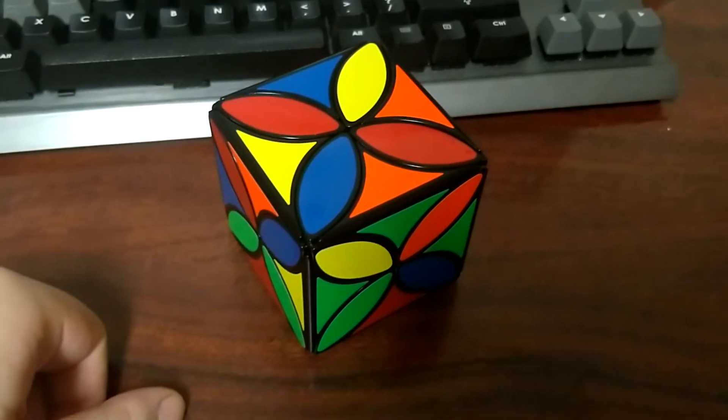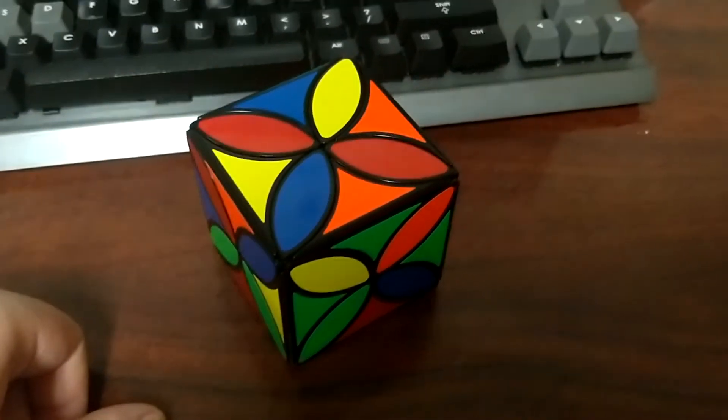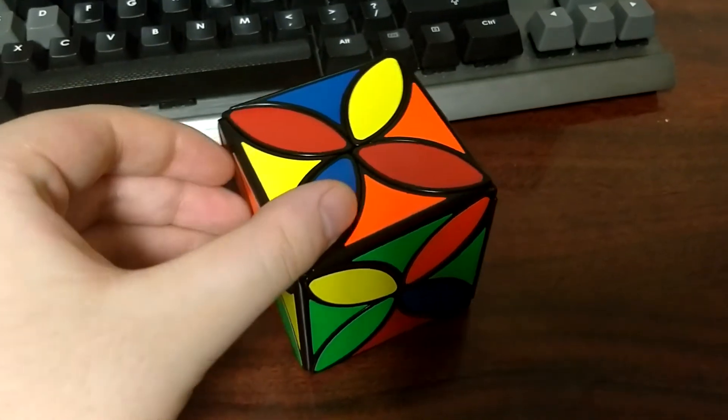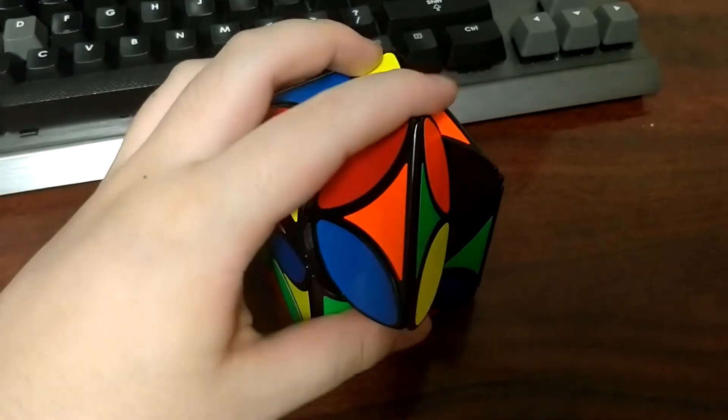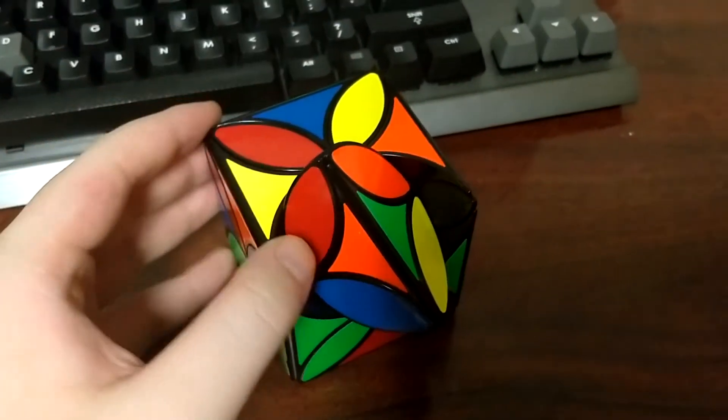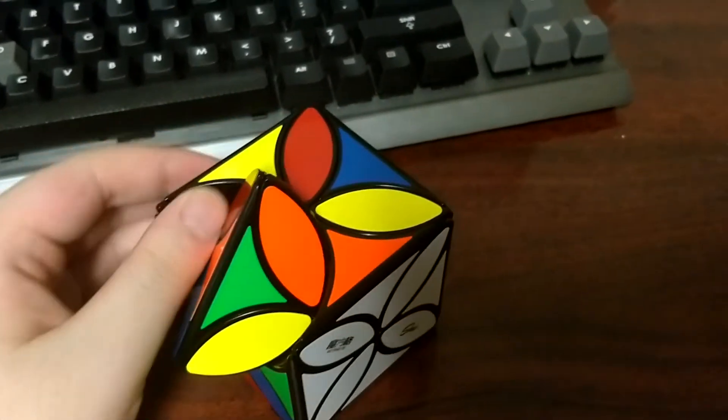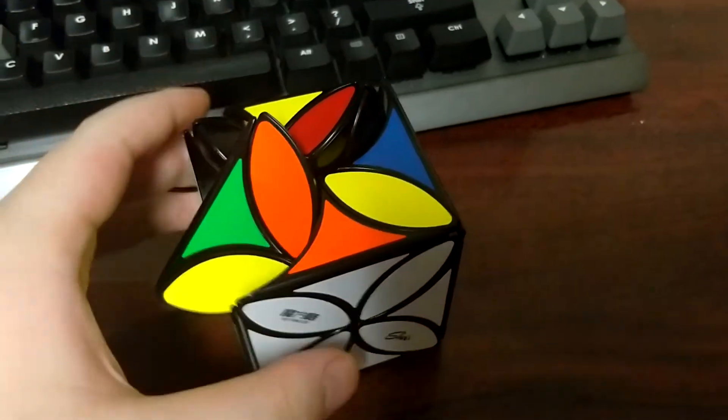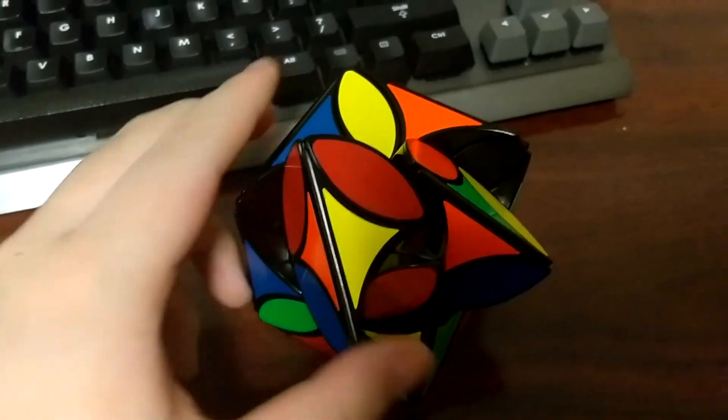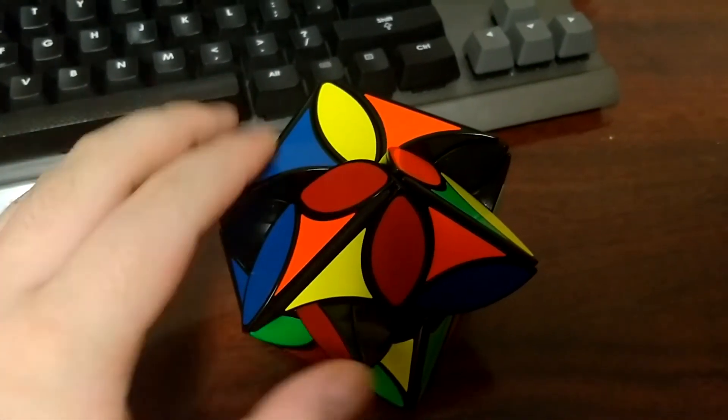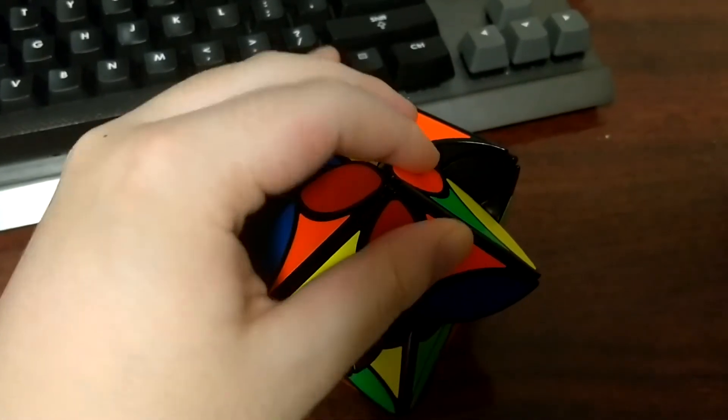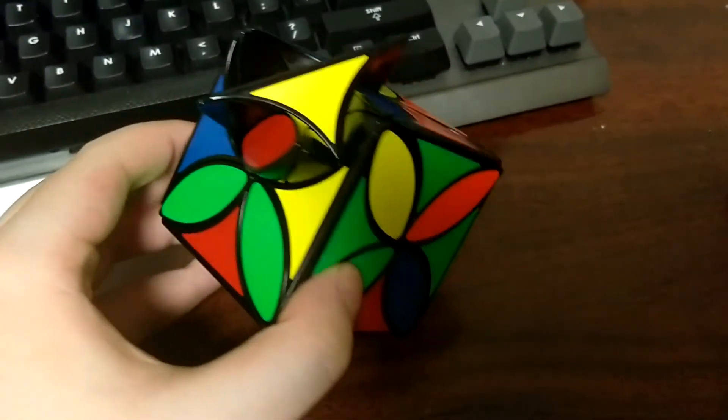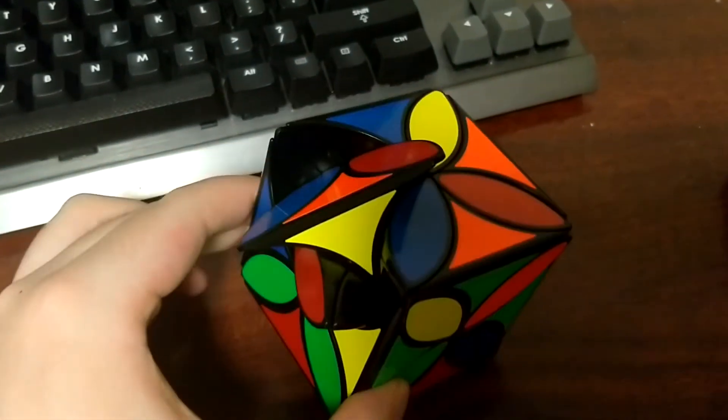So after I finished filming I discovered that with the clover cube you can actually do these sort of jumbling moves that you can also do. Let's see if I can get this jumbling move that you can also do on the Kirbycopter. So that's pretty neat.